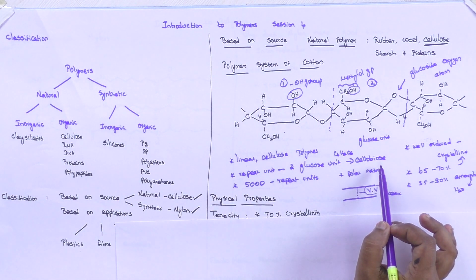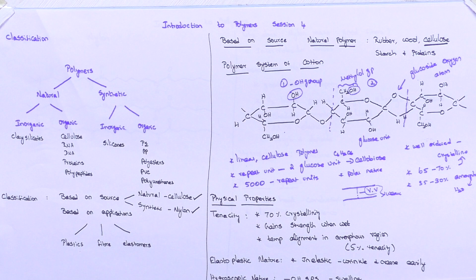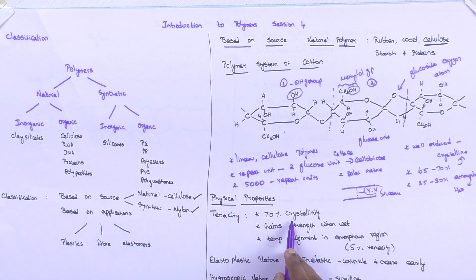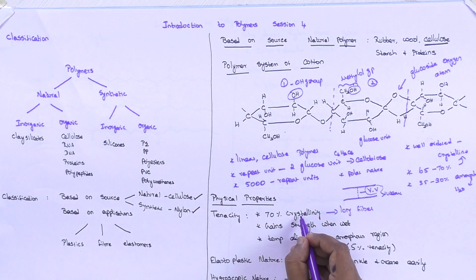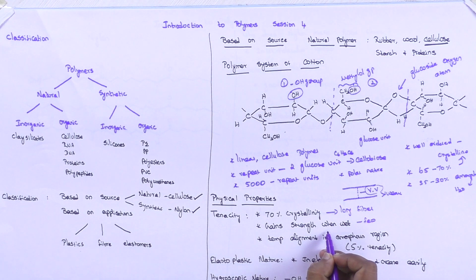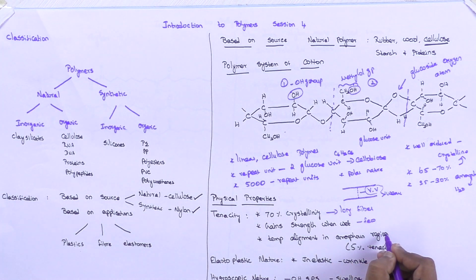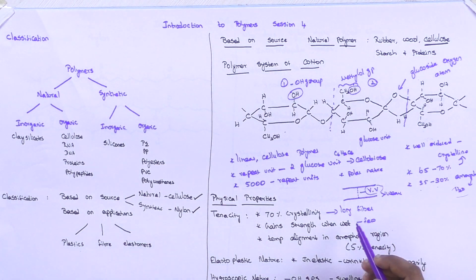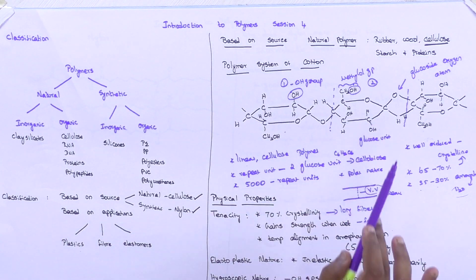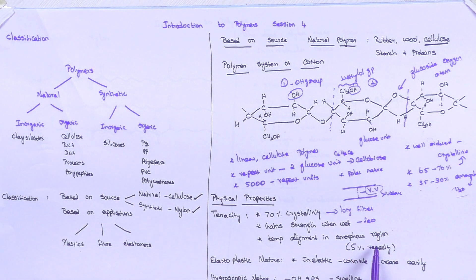The most important physical properties are tenacity, elastoplastic nature, and hygroscopic nature. The polymer has nearly 70 percent crystallinity, so the fiber is very long. Cotton is one of the few fibers that gains strength when wet, because of temporary alignment in the amorphous region when it absorbs water. About 30 to 35 percent amorphous region allows water to enter the structure, and this temporary alignment increases the tenacity by approximately 5 percent.